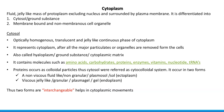It is called hyaloplasm, or ground substance, or cytoplasmic matrix. It contains molecules such as amino acids, carbohydrates, proteins, enzymes, vitamins, nucleotides, and tRNA molecules. Proteins occur as colloidal particles, thus cytosol is referred to as a cytocolloidal system also.